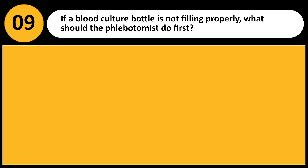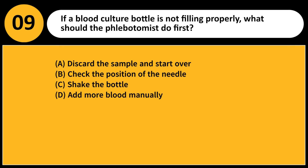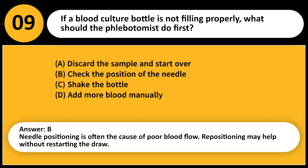If a blood culture bottle is not filling properly, what should the phlebotomist do first? A. Discard the sample and start over. B. Check the position of the needle. C. Shake the bottle. D. Add more blood manually. Answer: B. Needle positioning is often the cause of poor blood flow. Repositioning may help without restarting the draw.